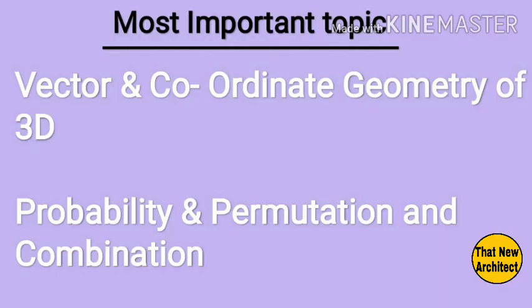Next hai Vector and 3D — Vectors se ek question and 3D se do questions, toh total 3 questions. Permutation and Combination dono related topics hain aur dono mein se ek ek question aata hai har saal JEE mein.